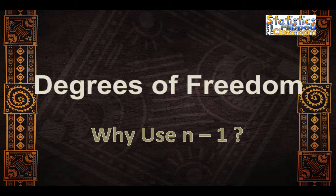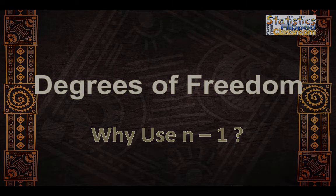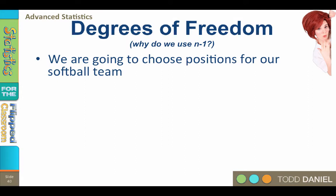When I tell people that we use n minus 1 in the denominator for estimating population standard deviation, many people want to know why. This video will explain the mathematics behind why we use n minus 1 and what we mean by degrees of freedom. The degrees of freedom refer to how many options exist for variation in our data. Specifically, it means degrees of freedom to vary.